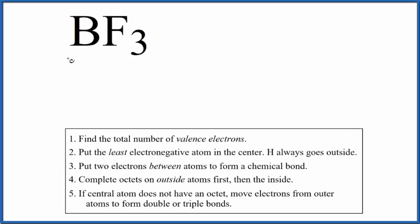Let's draw the Lewis structure for BF3. This is boron tri-fluoride. The first thing we do with Lewis structures, we find the total number of valence electrons for the molecule.